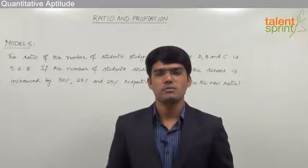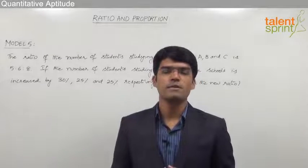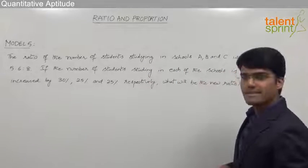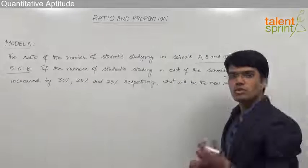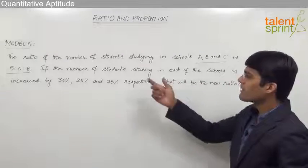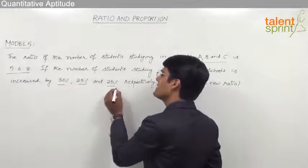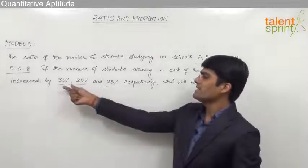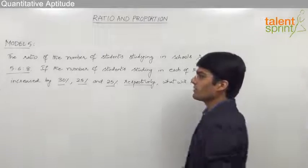Let us now discuss the fifth model from ratio and proportion, where the percentage changes in the shares of each of the persons is given and from which we are supposed to get the new ratio. The question here is: the ratio of number of students studying in schools A, B and C is 5:6:8. If the number of students studying in each of the schools is increased by 30%, 25% and 25% respectively, what will be the new ratio?